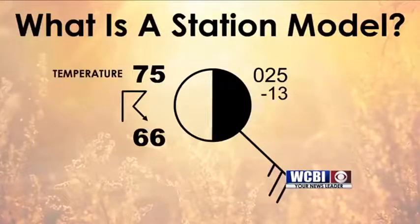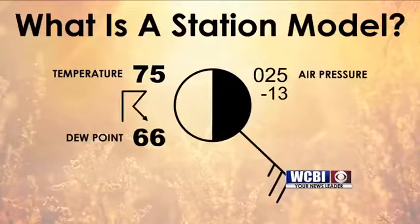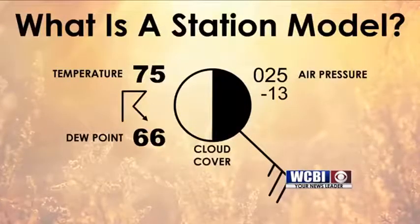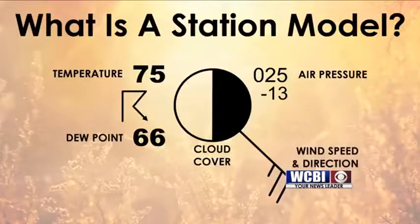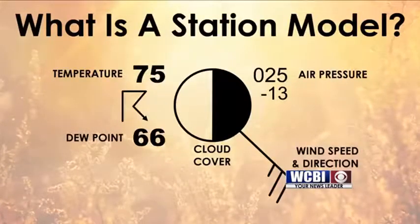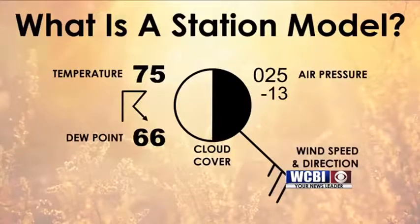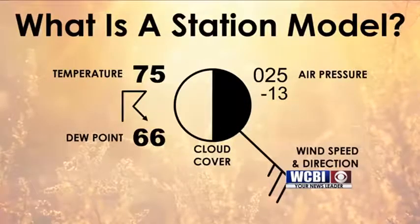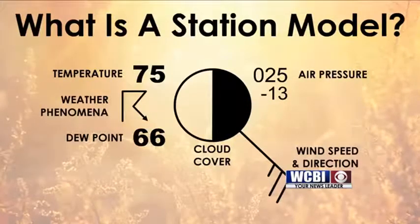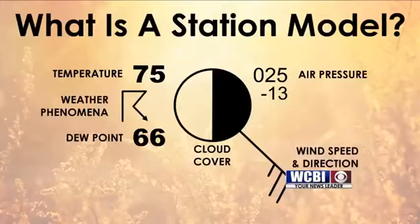Every station has a few key aspects. They are temperature, dew point, pressure, cloud cover, and wind speed and direction. We'll talk more about station models another week, but some station models also show a weather symbol such as this one.